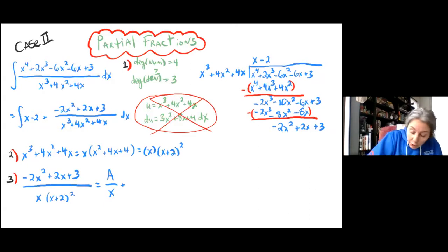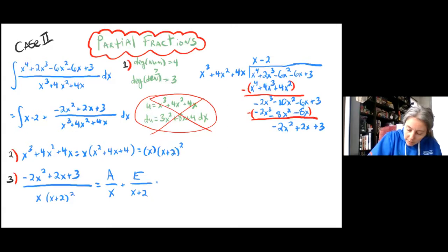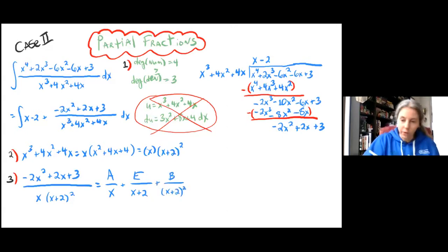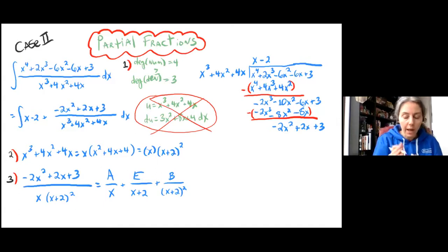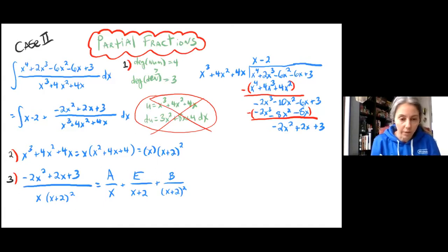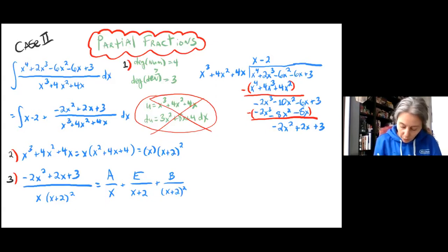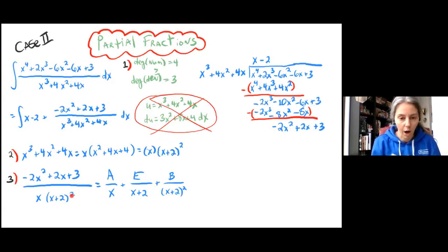Note that x plus 2 occurs two times, which means it gets two fractions all to itself: E over (x plus 2) plus B over (x plus 2) squared. Remember, x plus 2 got two fractions — each time the degree of x plus 2 increased until we got to the squared term.